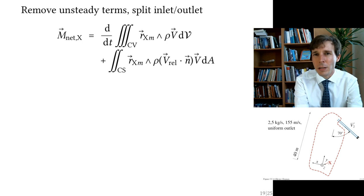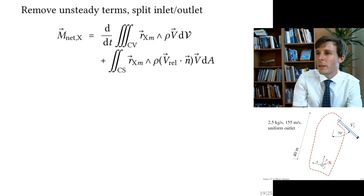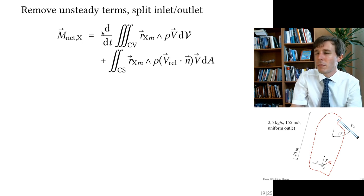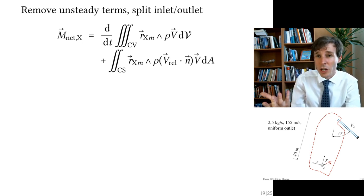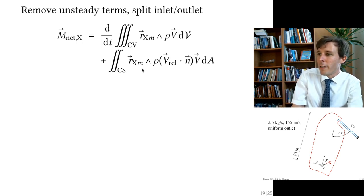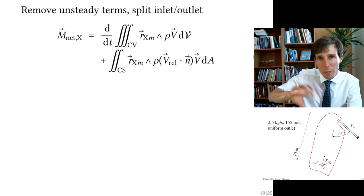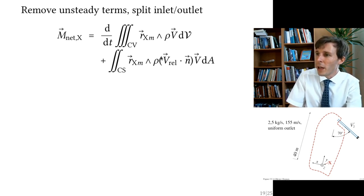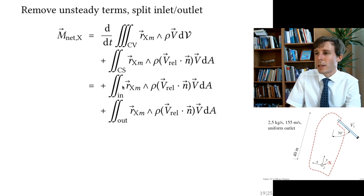The angular momentum balance equation: the net moment on the fluid equals the rate of change of angular momentum inside the control volume — which is zero here since it doesn't change appreciably — plus the net flux of angular momentum through the boundaries, split into inlet and outlet terms.